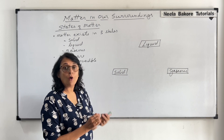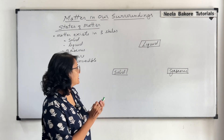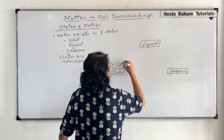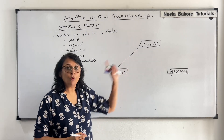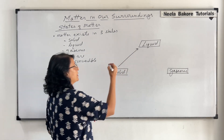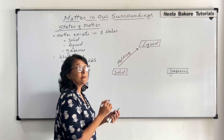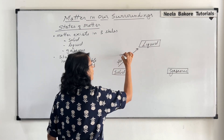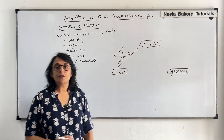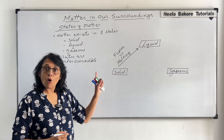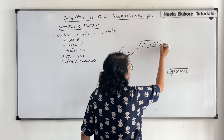Let us see how we convert one state into the other, and what that process is known as. Solid can be converted into liquid — ice can change into liquid water. This process is known as melting, or there is one more word: it is called fusion. So we can call this process melting or fusion — ice changing into liquid water.